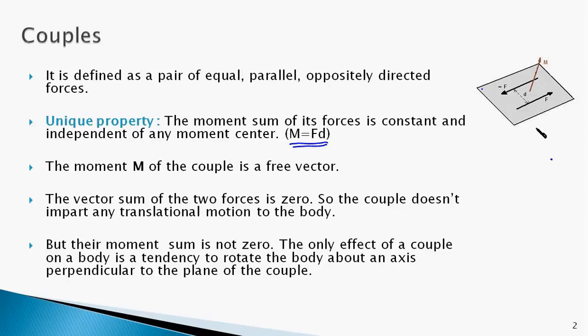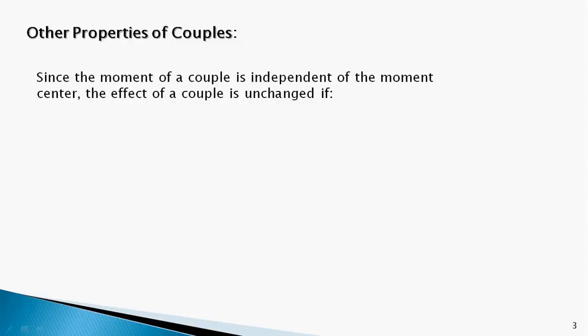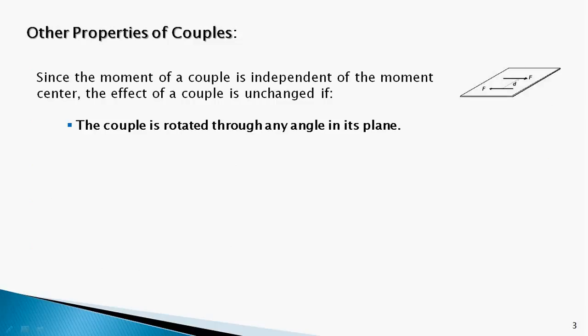There are some other important properties helpful in solving problems. Since the moment of a couple is independent of the moment center, the effect of a couple is unchanged if the couple is rotated through any angle in its plane. For example, a planar body acted upon by a couple of magnitude FD in clockwise rotation — if the forces are turned through 90 degrees, the moment still remains FD, still clockwise, and the effect of the couple remains the same.